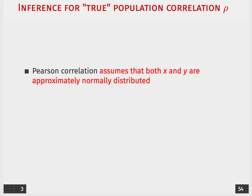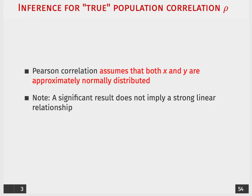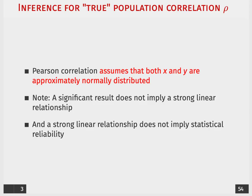Before we go into the steps and how to actually construct confidence intervals around our correlation coefficient, I just want to briefly discuss the assumptions that we have and some important factors to consider. When we're talking about a Pearson correlation here, we're assuming that both x and y are approximately normally distributed. And again, that's the sampling distribution. A significant result is also not necessarily going to imply that there is a strong linear relationship. And a strong linear relationship does not necessarily imply statistical reliability.